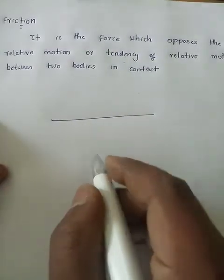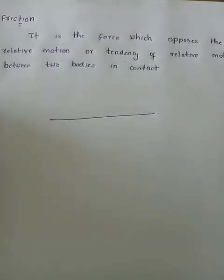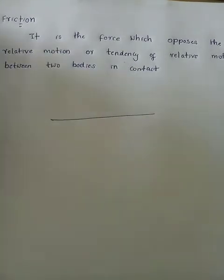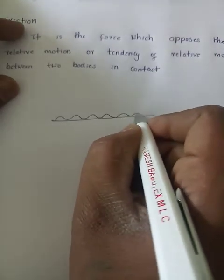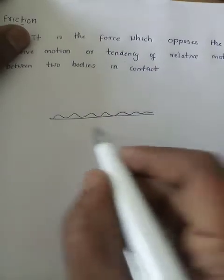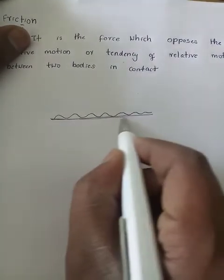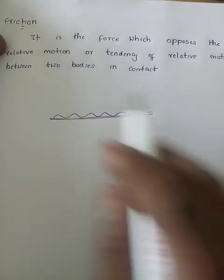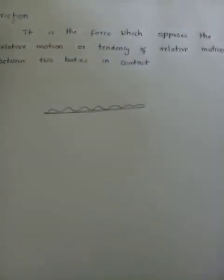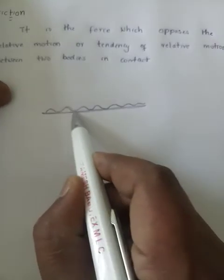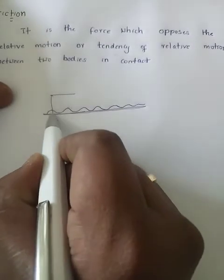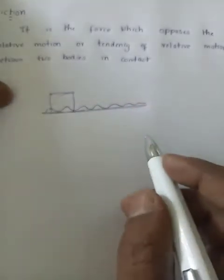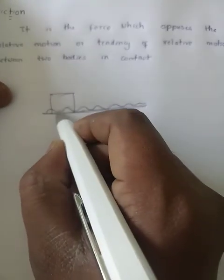How does friction come about? Let us take an example. This is a surface — it appears to be smooth, but it is not a smooth surface. There are some irregularities in the surface. It appears as a smooth surface, but if you look through a microscope or any device it appears to be a rough surface. Now, if an object is placed on the surface, let us assume that this object also has a smooth surface, but it has the same irregularities.